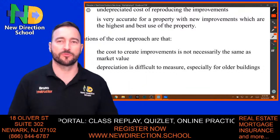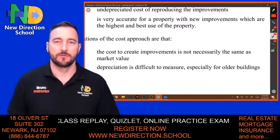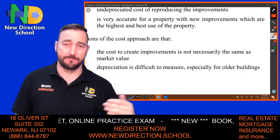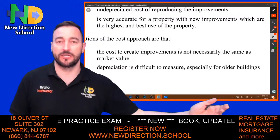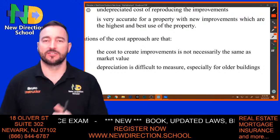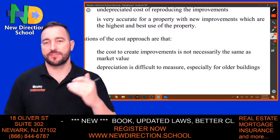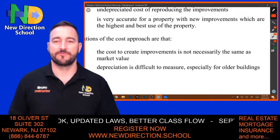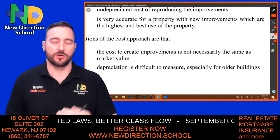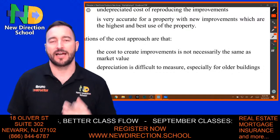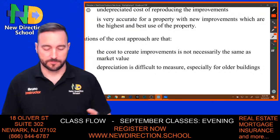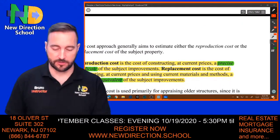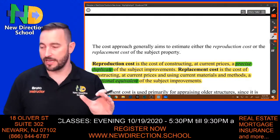Why is the cost to create improvements not necessarily the same as market value? Because building a property in Newark will have a different value than the same build-out in New York. A single family, three bedroom, two bath, a thousand square feet — bring it to New York and both will have different values. Even between neighboring towns like Newark, Elizabeth, and Linden, they have different values and different markets. So the cost might be one thing; the price or value might be another. Newer buildings tend to have similar price and value if they're within the same area.